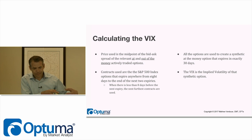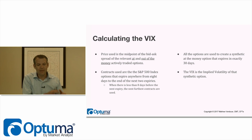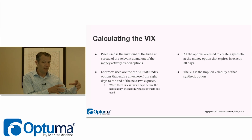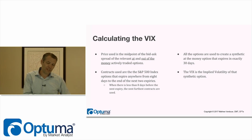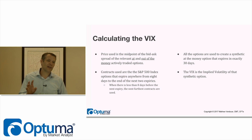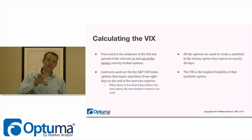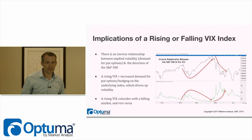All the options are brought together to create a synthetic at-the-money option that expires in exactly 30 days, using time weightings and weighted averages. The VIX is then the implied volatility of that synthetic option — that's how we get to the number. The textbook has links to Excel spreadsheets with the exact math, but this covers everything you need for the exam.